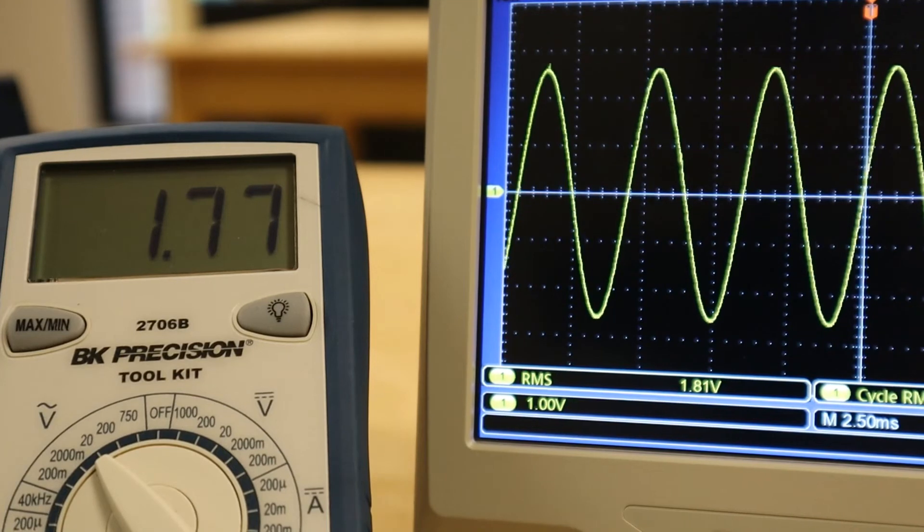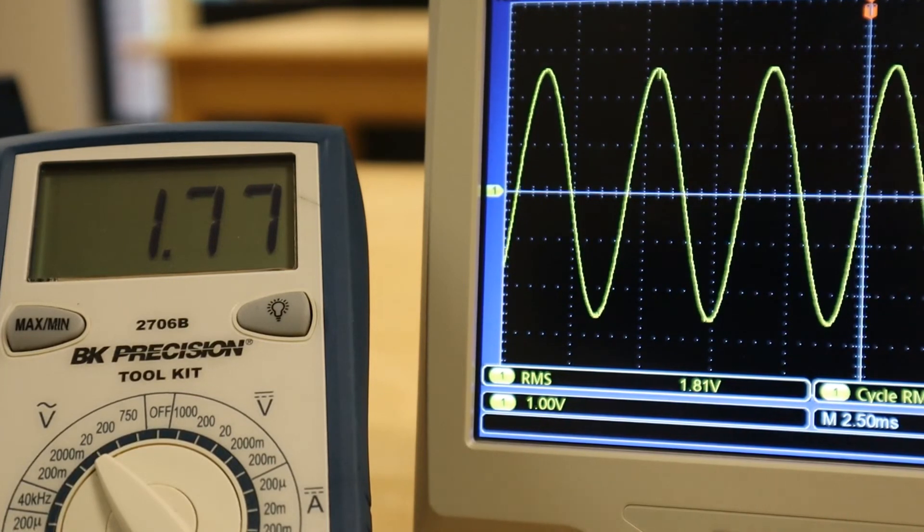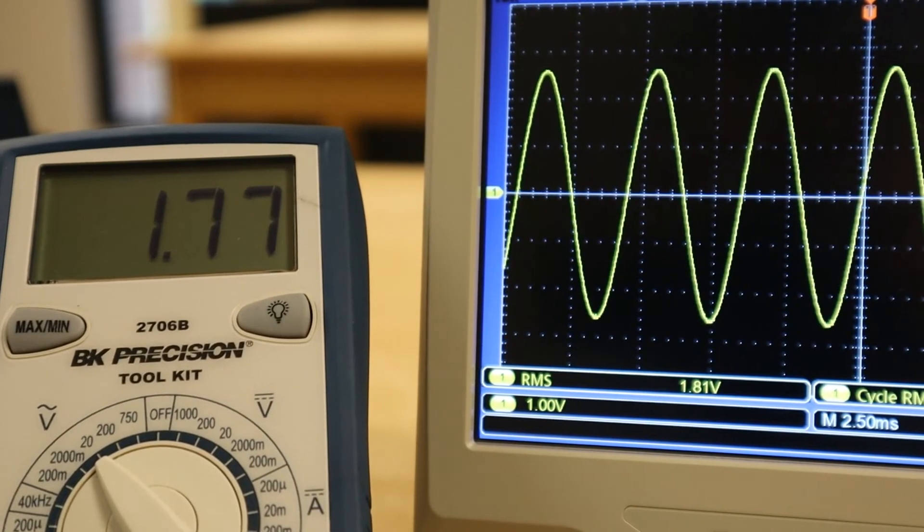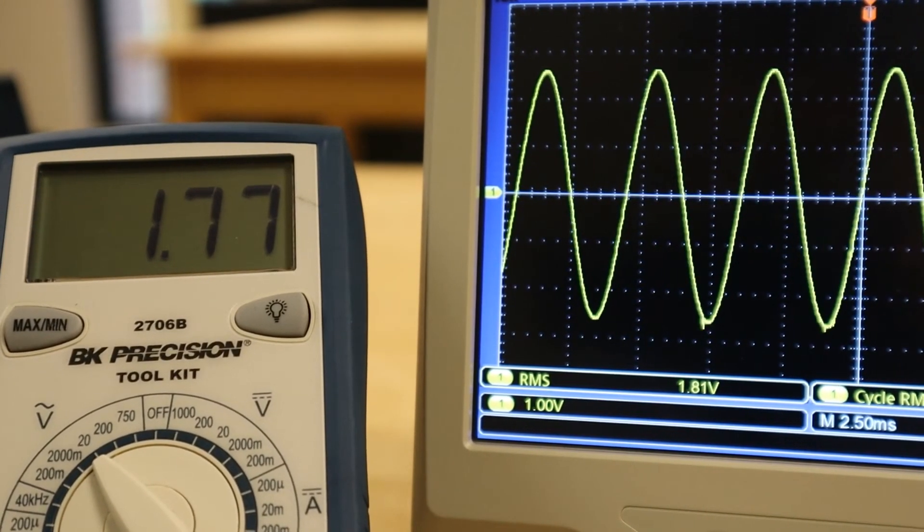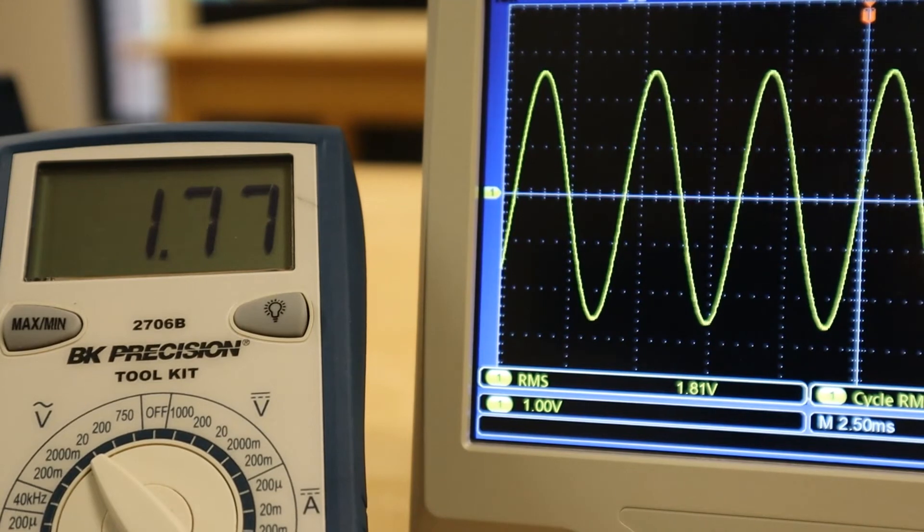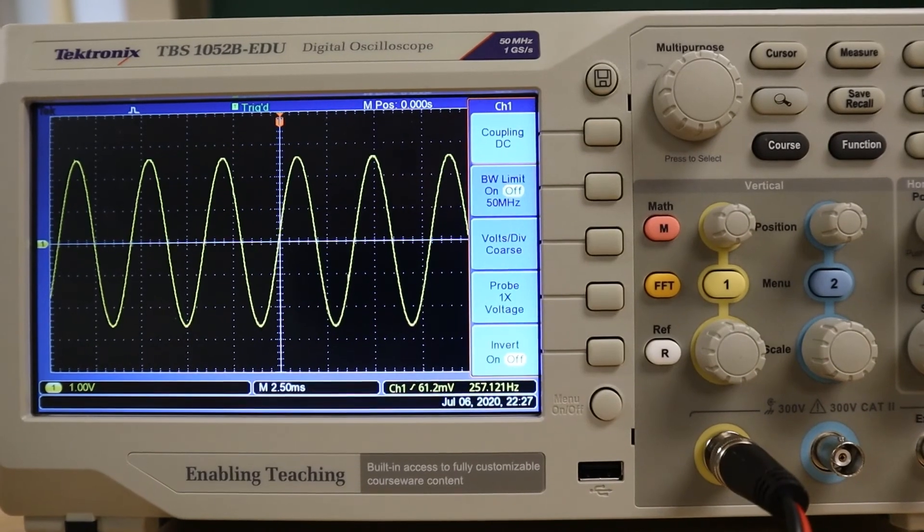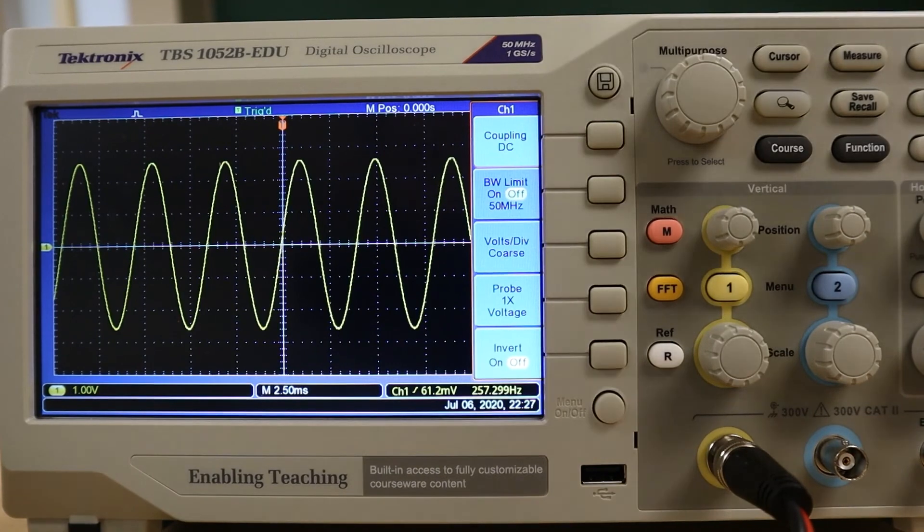And while we could calculate this RMS value from the oscilloscope by hand, it is far more convenient to have the oscilloscope do those calculations for us. And as we move into this fourth procedure of this experiment, we will explore how to use the automated measuring features included on this digital oscilloscope to determine an RMS voltage for this waveform.